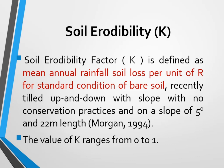The soil erodibility factor K is defined as the mean annual soil loss per unit of R, or the rainfall erosivity, under standard conditions of bare soil, recently tilled up and down slope with no conservation practice, on a slope of five degrees and 22-meter length. Morgan developed this soil erodibility factor K on a five percent slope with 20-meter length and no conservation practice.